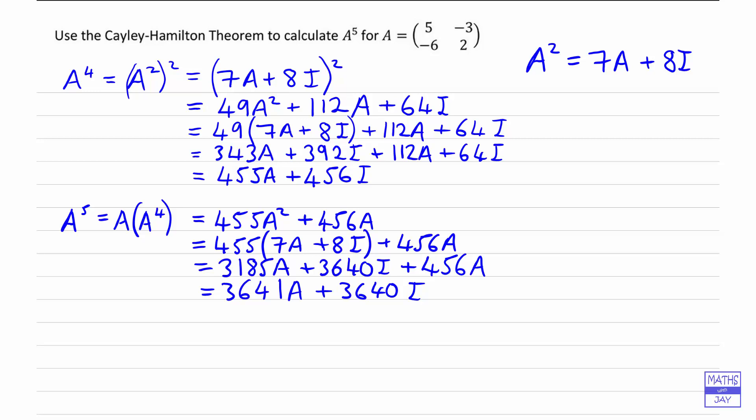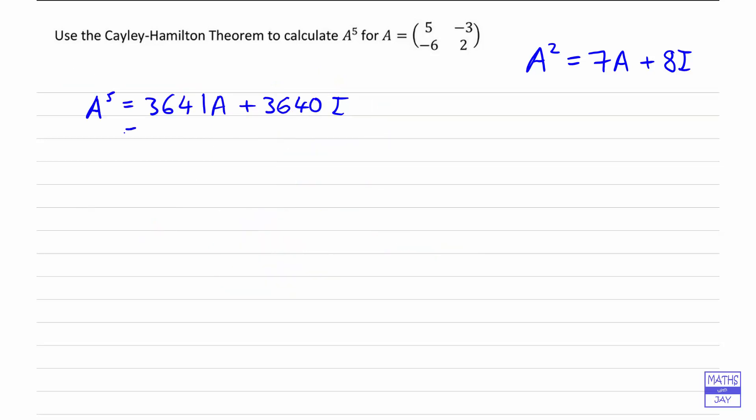So there we have used the Cayley-Hamilton theorem to simplify A⁵, so that it's simply a number multiplying the matrix A plus a number times the matrix I. That's much easier to do than matrix multiplication. So now we finally are ready to put the matrices in, the A and the I. And I think we need a bit more space.